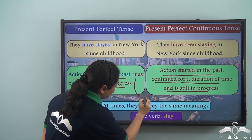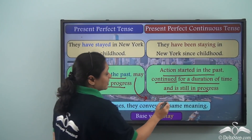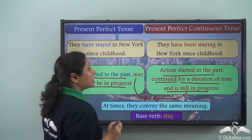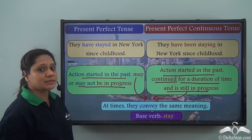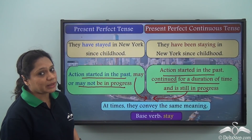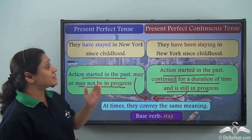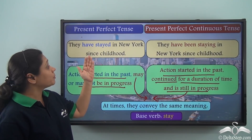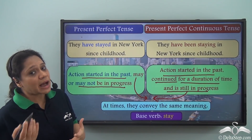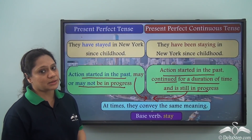Since there is a 'maybe' in case of the present perfect tense and 'still in progress' in case of the present perfect continuous tense, they essentially give us the same meaning in both cases. Verbs like 'stayed' and 'studied' convey the same meaning in some cases — it depends how you use them in the sentences.